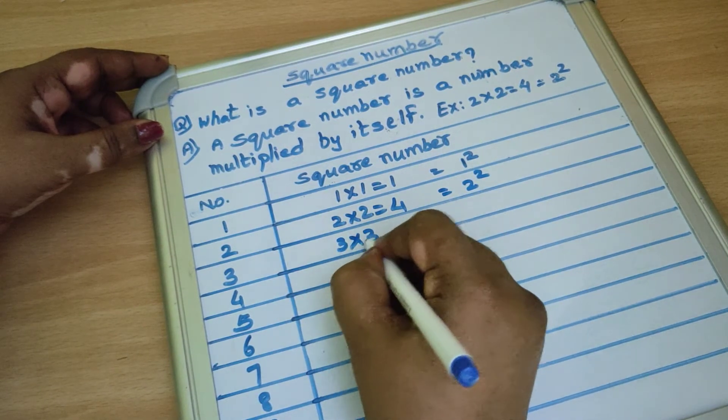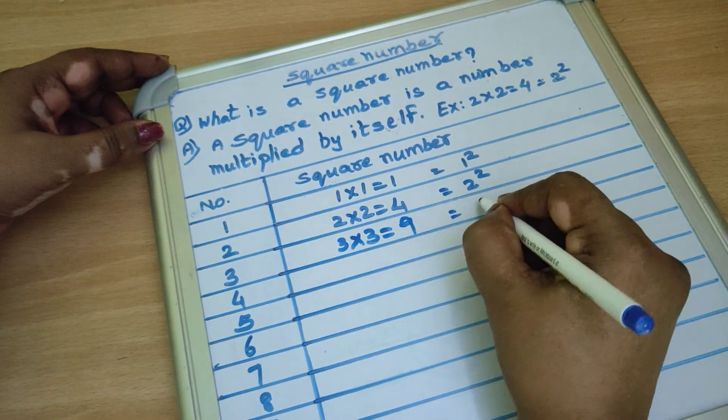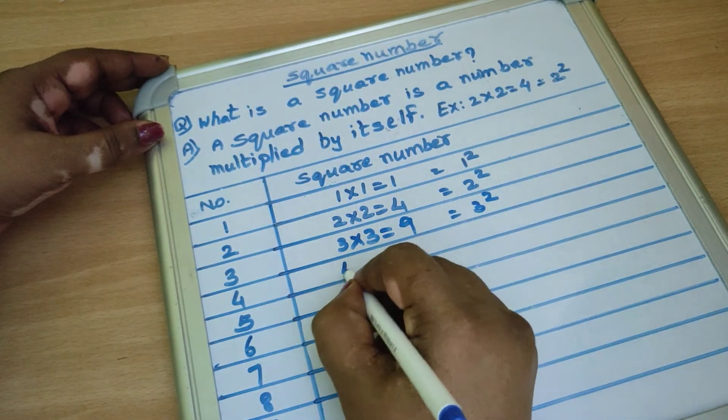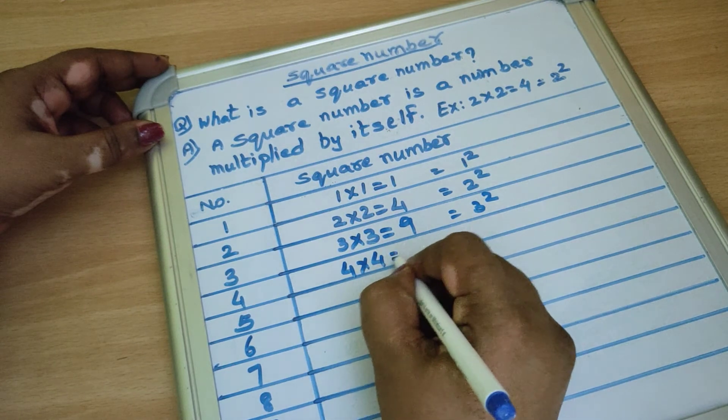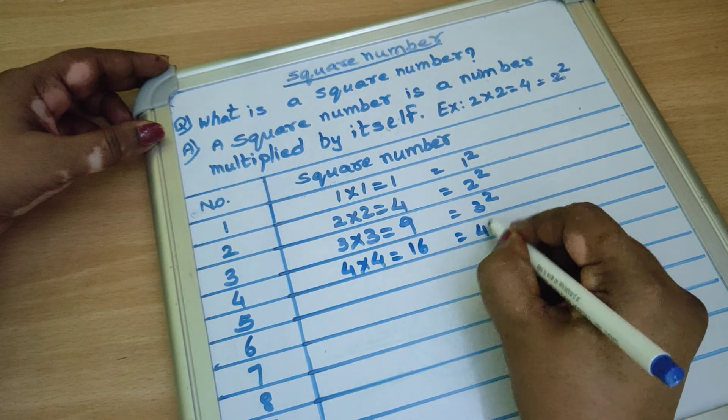3 into 3 equal to 9. We write as 3 square. 4 into 4, 16. We write as 4 square.